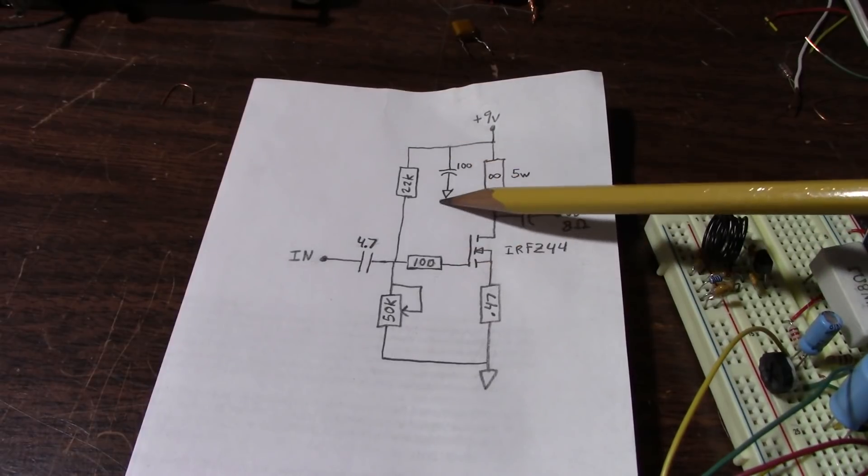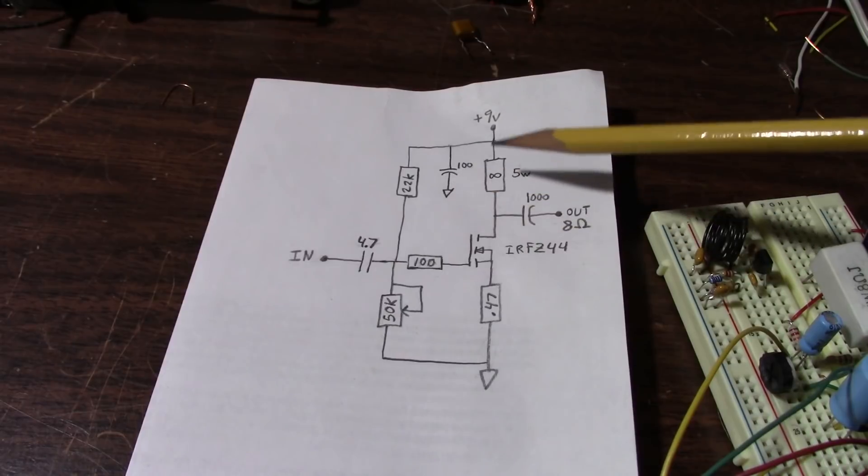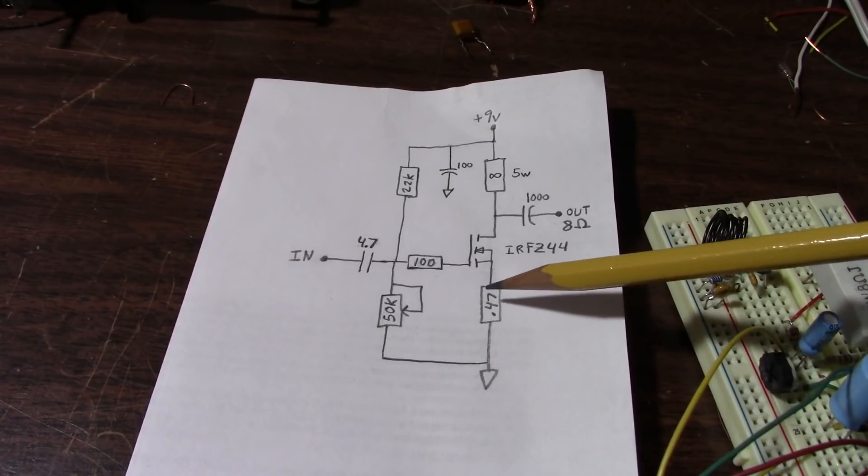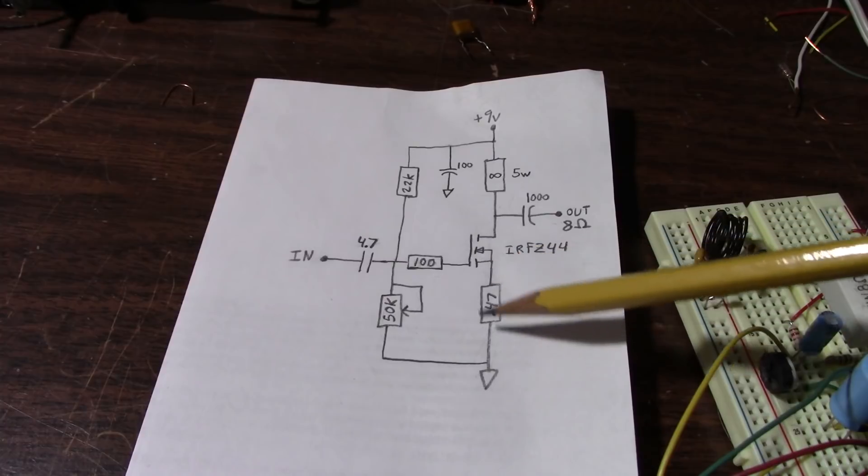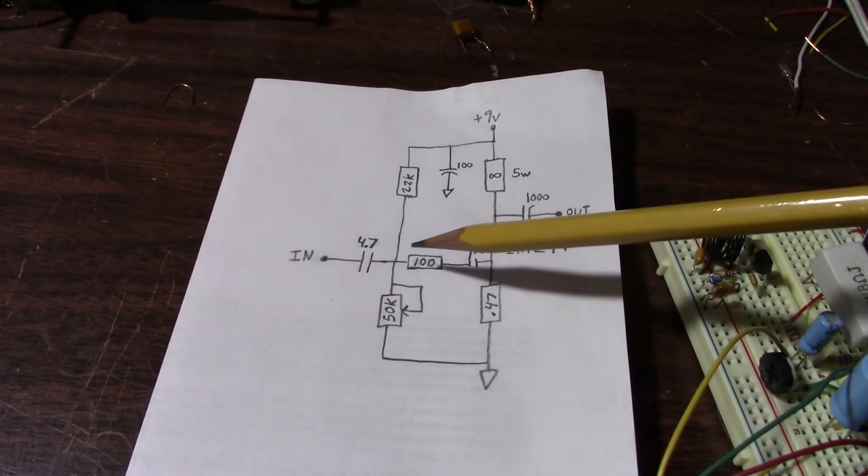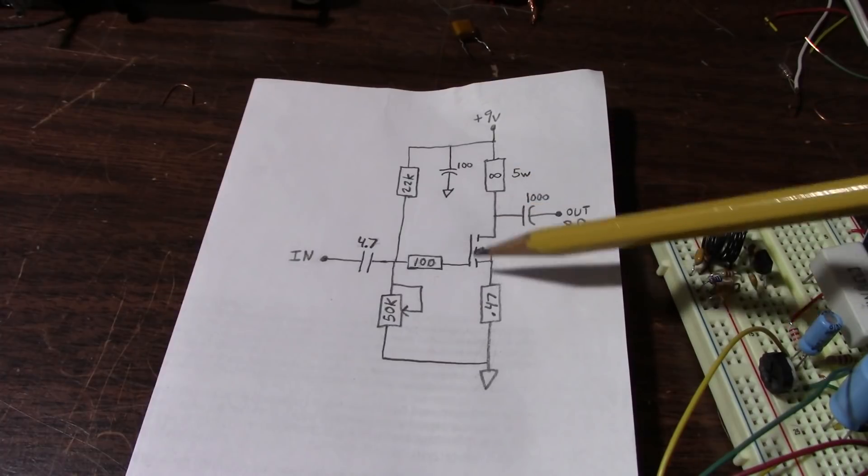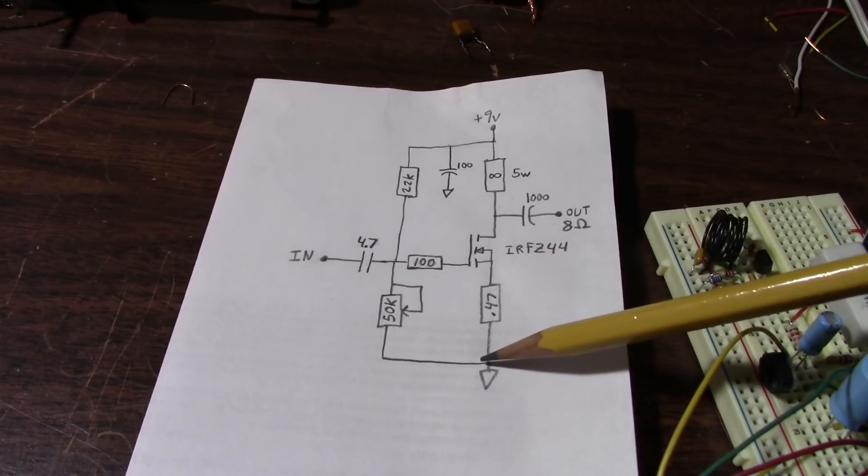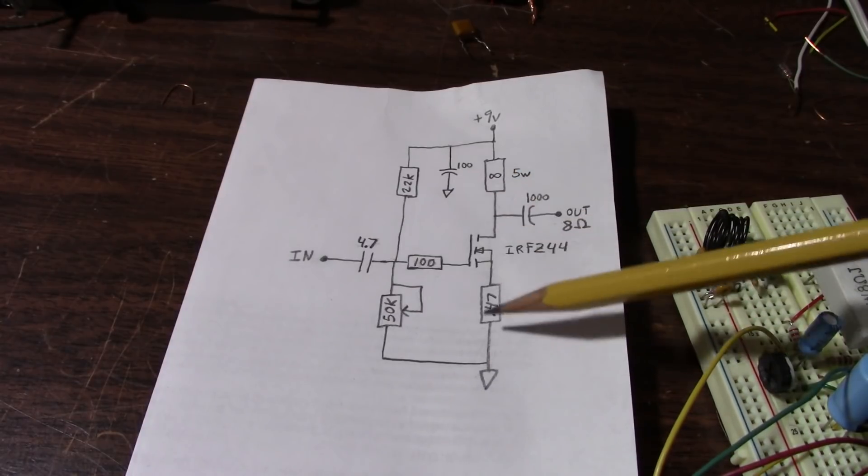Next is just a supply bypass capacitor. And then here is our output part of the circuit. This resistor here is kind of like the emitter resistor. It's the source resistor. What it does is provide some negative feedback to the circuit. So when this thing is set up, there's going to be current flowing through the output here. Because it's class A, it's going to have a decent amount of current flowing.